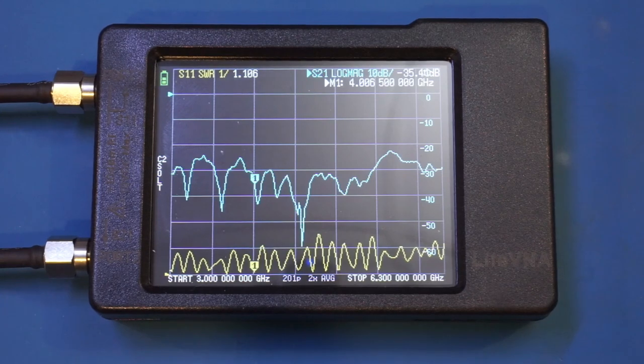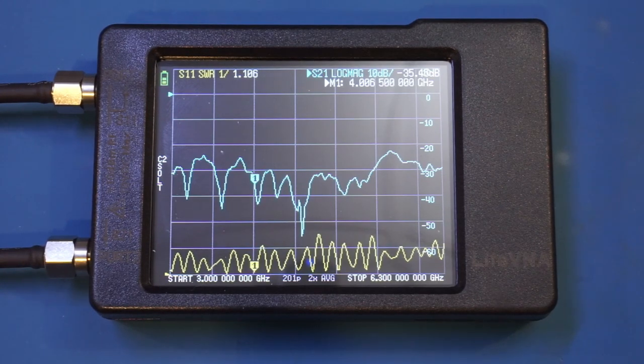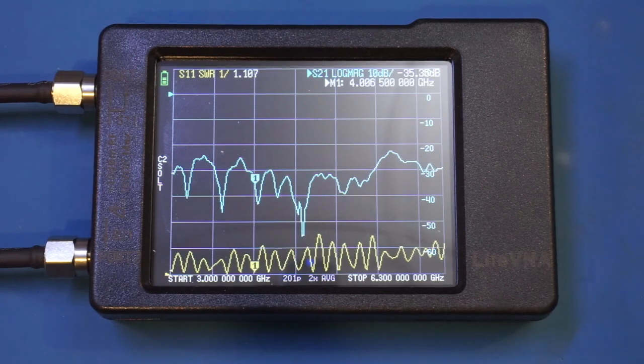Next I will do some measurement of a GPS patch antenna. GPS antennas typically receive the L1 signal at 1.57542 gigahertz frequency and have very acute response.